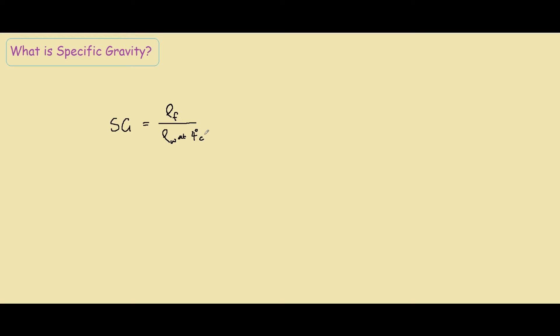You might be wondering why it's 4 degrees, but that's because the density of water at 4 degrees is 1000 kilograms per meter cubed. Another thing to note is that since specific gravity is a ratio of two densities, the end result has no unit, it's just a number. So let's use this formula in an example.